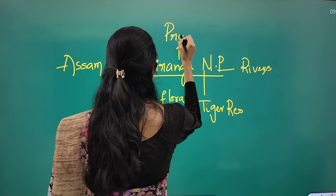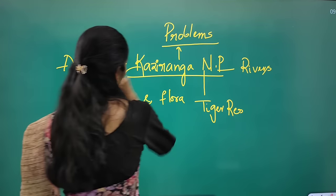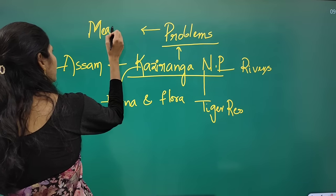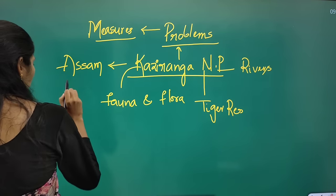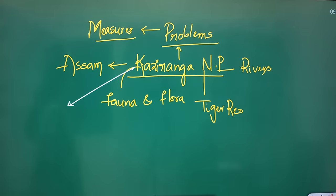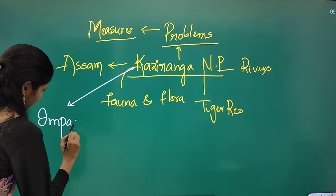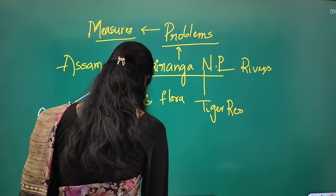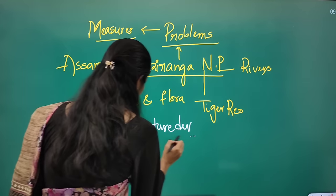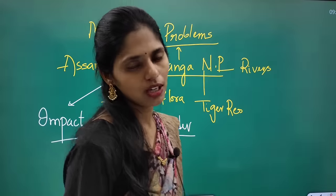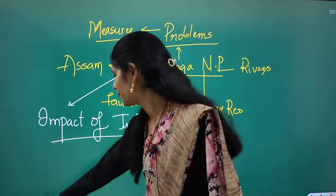You also have to see what are the problems faced by Kaziranga National Park — it is always affected by floods. You have to see what measures can be taken. One new dimension to explore: what will be the impact of infrastructure development in Kaziranga National Park? This is a very important dimension from this article's point of view.